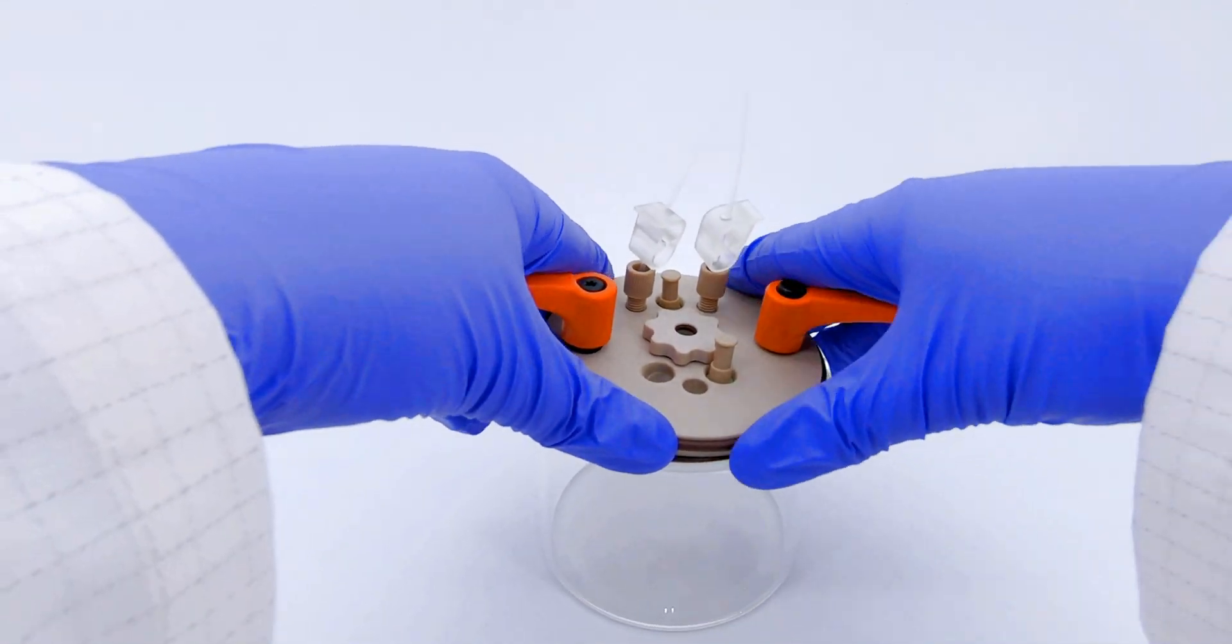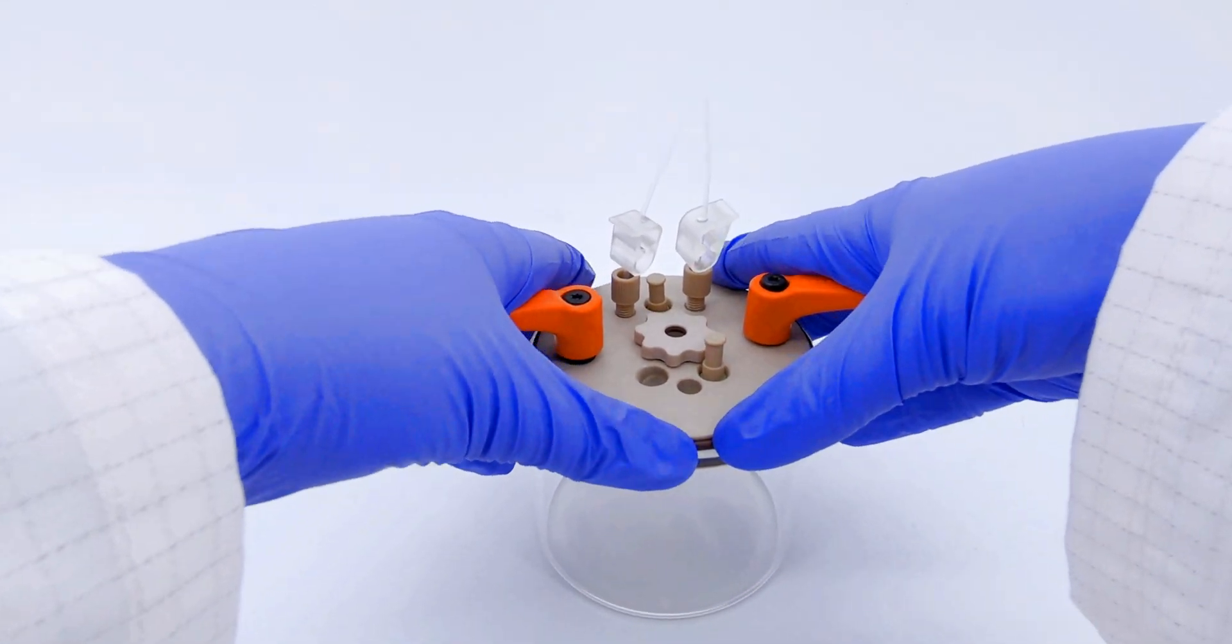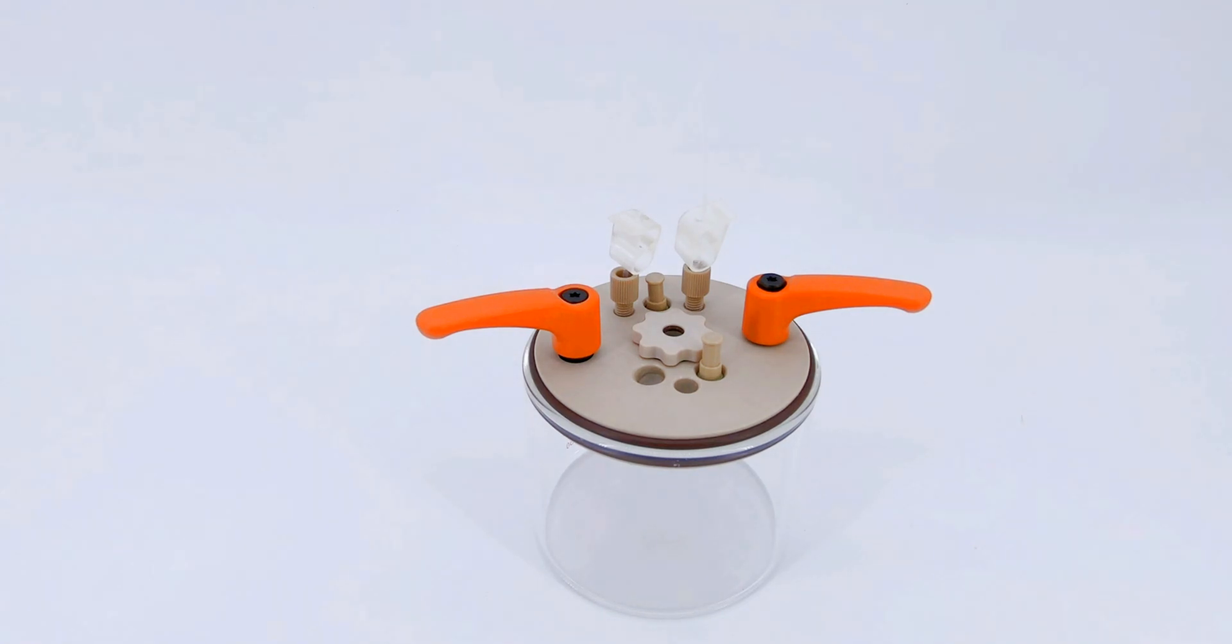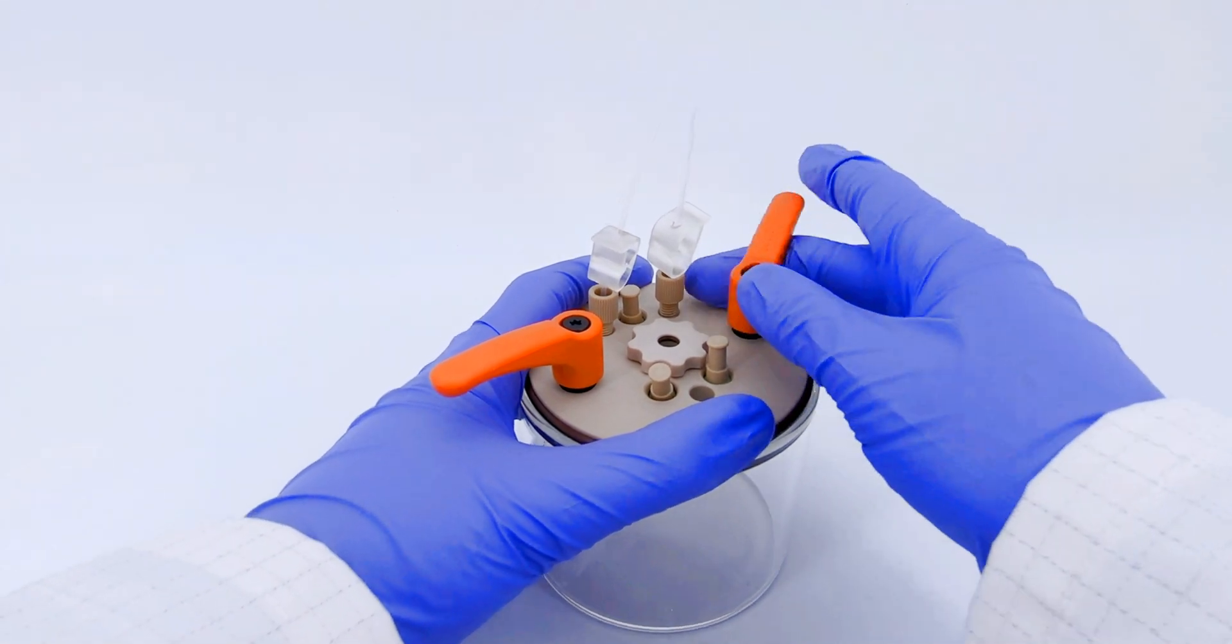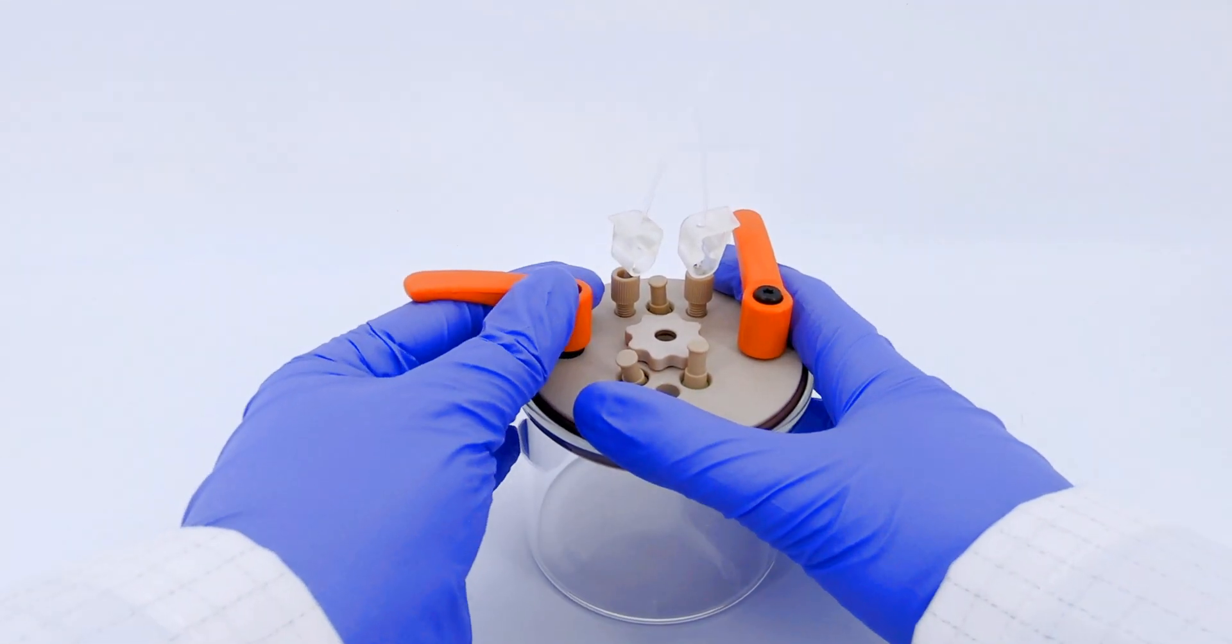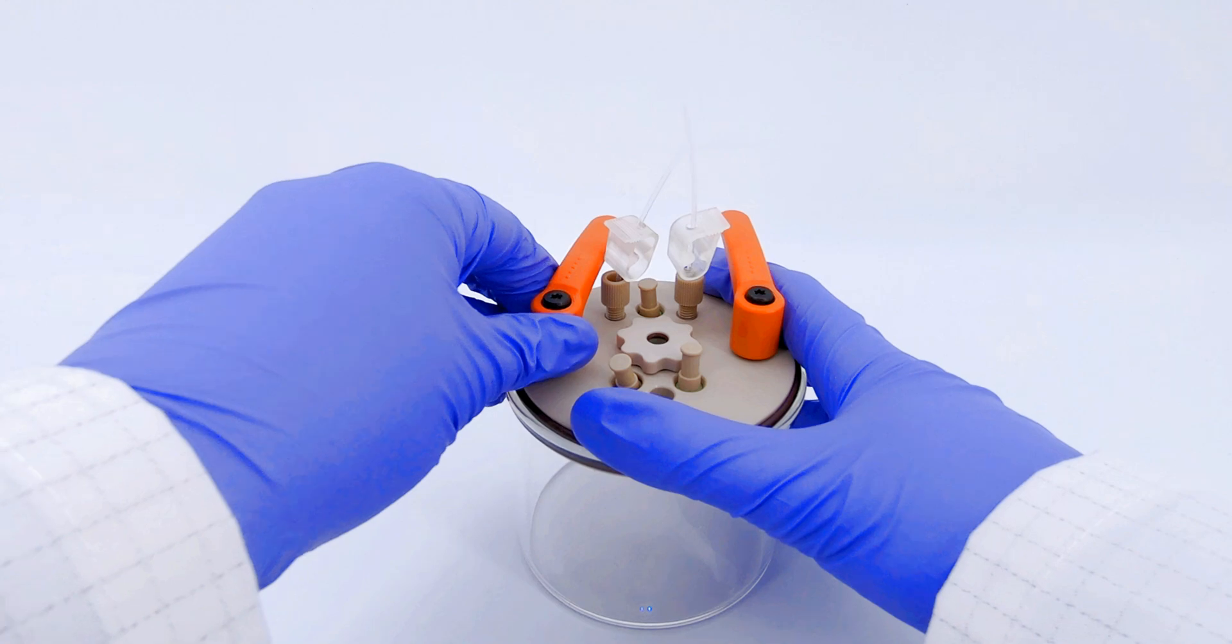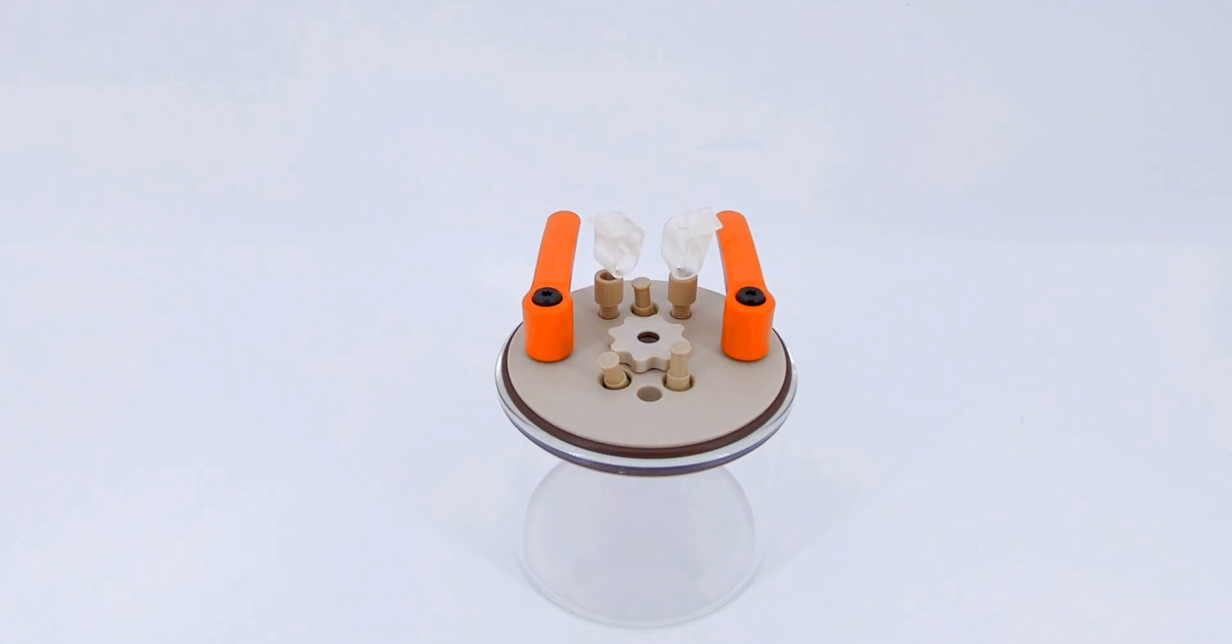Replace the lid and any plugs removed earlier and rotate the handles back to their original position. Congratulations! You've successfully dismantled your electrochemical cell.